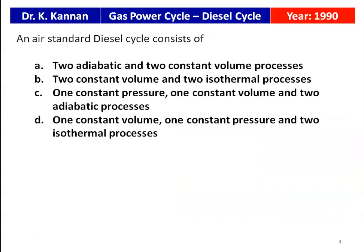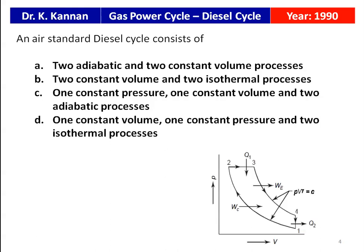This question is from the 1990 question paper. An air standard diesel cycle consists of: two adiabatic and two constant volume processes; two constant volume and two isothermal processes; one constant pressure, one constant volume and two adiabatic processes; or one constant volume, one constant pressure and two isothermal processes. From the PV diagram: 1 to 2 is isentropic (PVᵞ = constant), 2 to 3 is constant pressure, 3 to 4 is adiabatic (PVᵞ = constant), and 4 to 1 is constant volume. The correct answer is option C: one constant volume, one constant pressure, and two adiabatic processes.